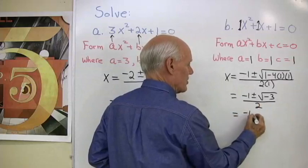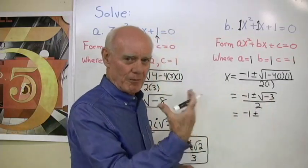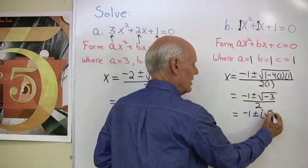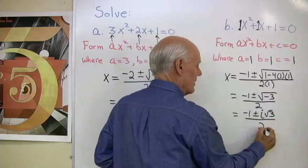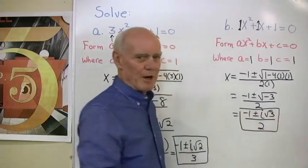So I want to write this as a complex number by taking that negative sign out from under the radical. I'll put an i in front of the radical. i square root 3 over 2. So those are my two solutions, one where I use the plus sign, one where the minus sign.